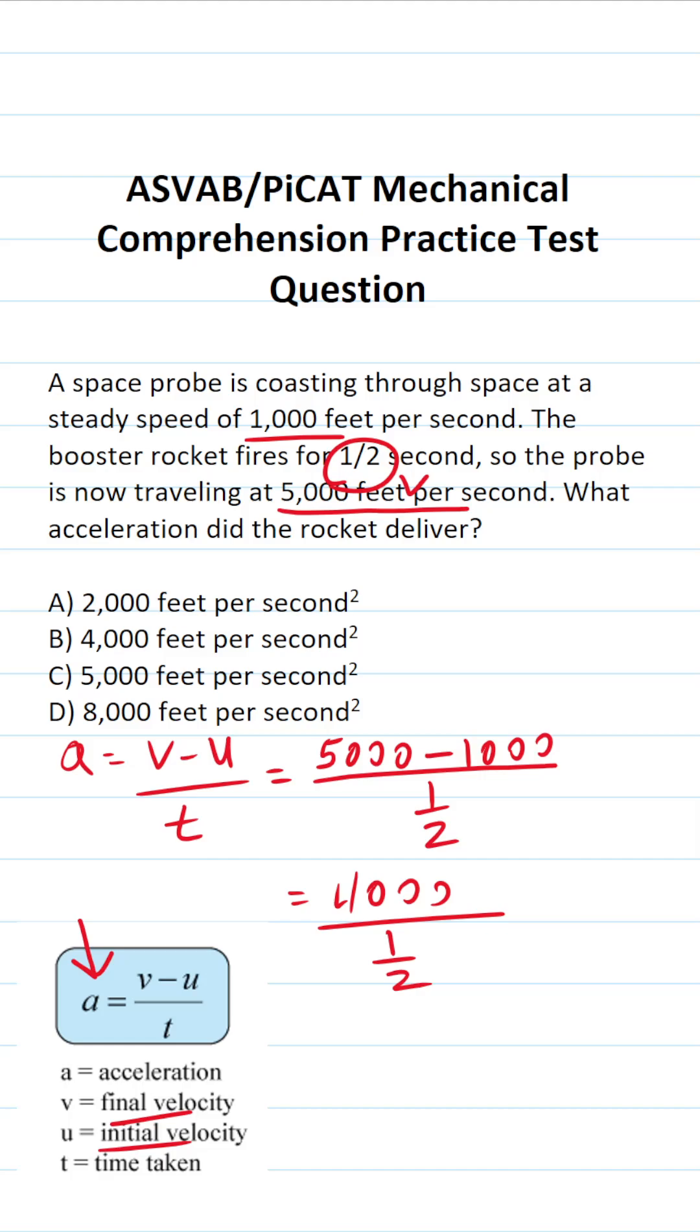Now we're dividing a whole number by a fraction, so we're going to follow the algorithm keep, change, flip. We keep 4,000 the same. We change from division to multiplication. And then we flip our fraction in the denominator, so instead of being 1 over 2, it's going to be 2 over 1.